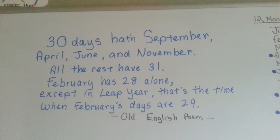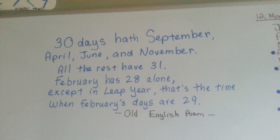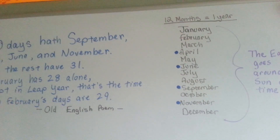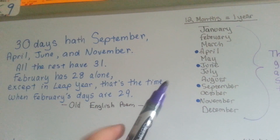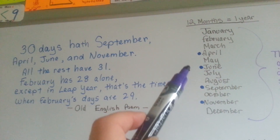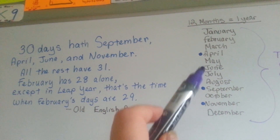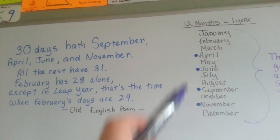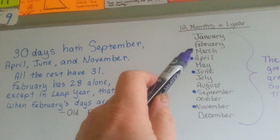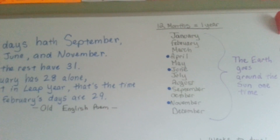This poem helps you remember which months of the year have 30 days. So we know that September, April, June, and November have 30 days. The other months have 31 days, and February has 28 or 29, depending on if it's leap year or not.